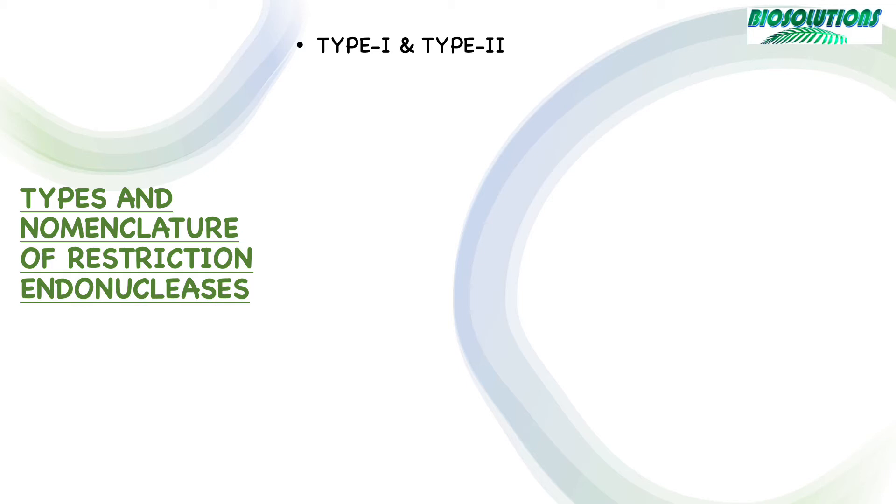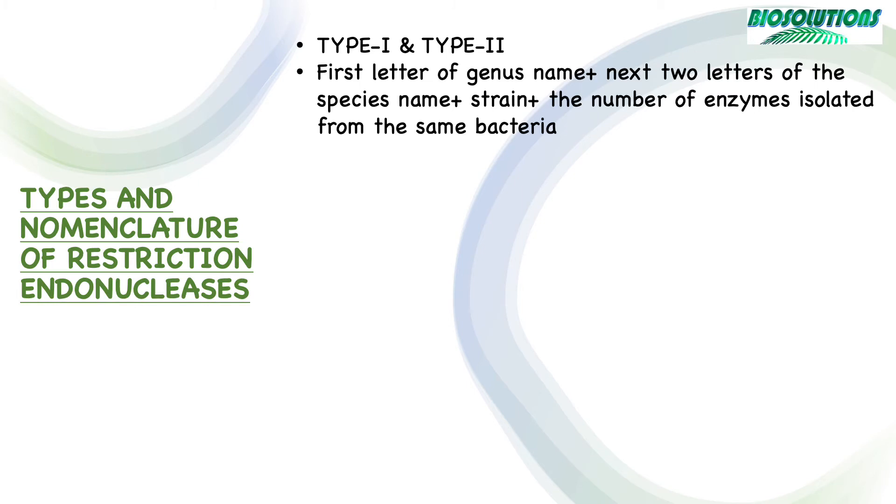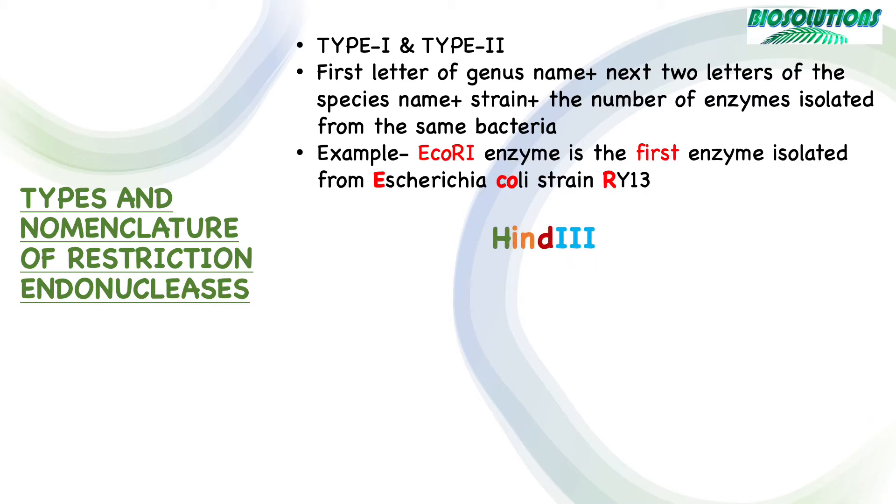You must have heard restriction enzyme names as EcoR1, BGL2, etc. Let's see how restriction enzymes get their names. Restriction enzymes are named by using the first letter of the bacterial genus from where they have been isolated, next two letters from the species name, fourth letter from the strain name, and a roman number for the number of enzymes isolated from that particular bacteria. For example here,